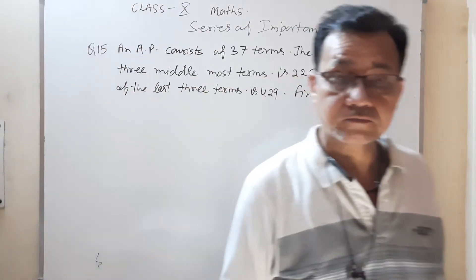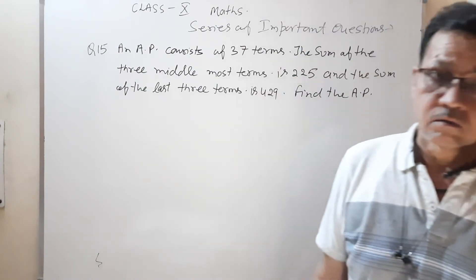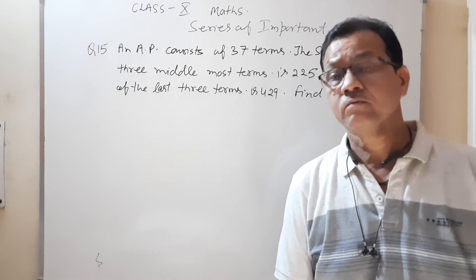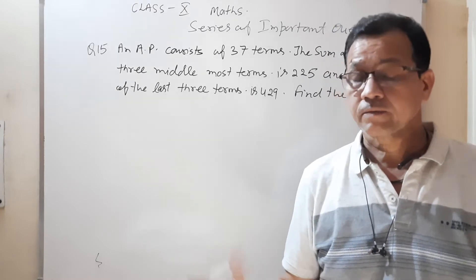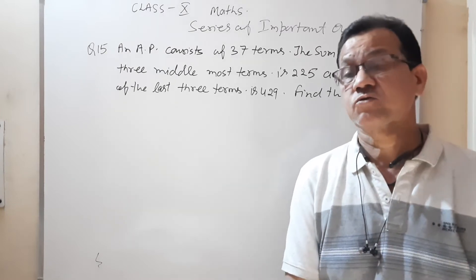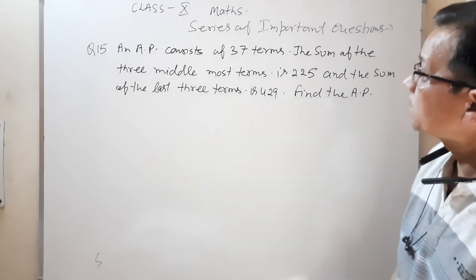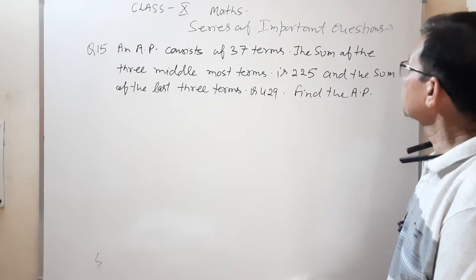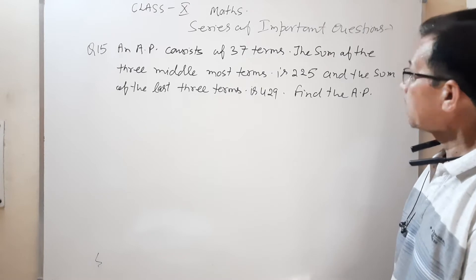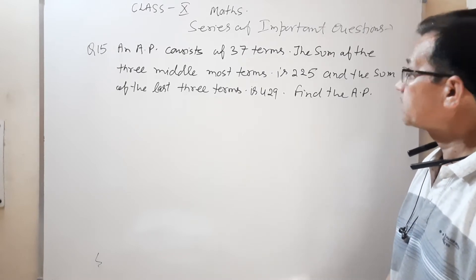Hello students, one more question for you from arithmetic progression — a different type of question. What is mentioned on the board: an AP consists of 37 terms, the sum of the three middlemost terms is 225 and the sum of the last three terms is 429. Find the AP.